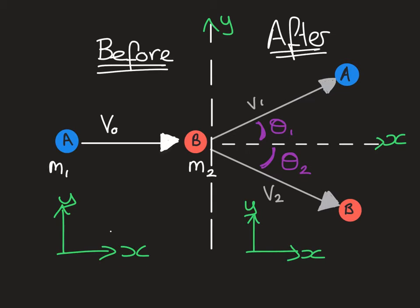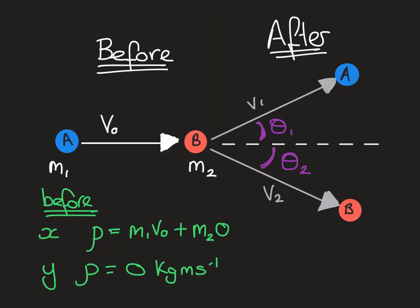Our next step is to write some mathematical expressions, all in symbols with no quantities yet, for the Y plane and the X plane using the conservation of momentum. Pause the video and have a go at that yourself, then play the video to check your answer. Here are our expressions for momentum in the X and Y plane before the collision. In the X plane, because B's velocity is zero it has no momentum, and the momentum of A is M1 multiplied by V0 — momentum equals mass times velocity. In the Y plane, the total momentum before the collision is zero.